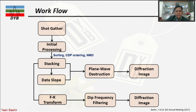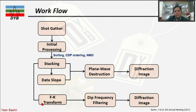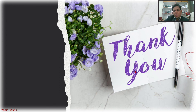Here is a simple workflow for diffraction imaging: starting from shot gather data, perform initial processing, and stack if working with stacked data or proceed with pre-stack data. From the stacked data, find the data slope and apply Plane Wave Destruction to get the diffraction image; alternatively, convert to FK domain, find the dip with frequency filtering, and get the diffraction image section. You can follow the referenced SEG article for more understanding about diffraction imaging. Thank you.